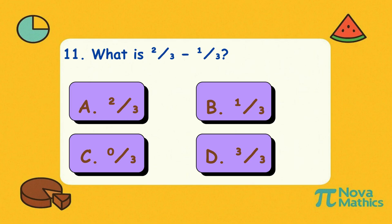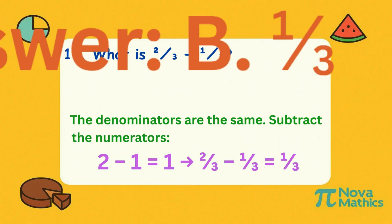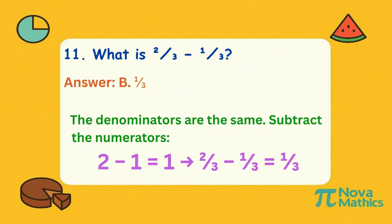Eleven. What is two-thirds minus one-third? Two minus one is one on top. Keep the bottom number the same. That gives one-third.